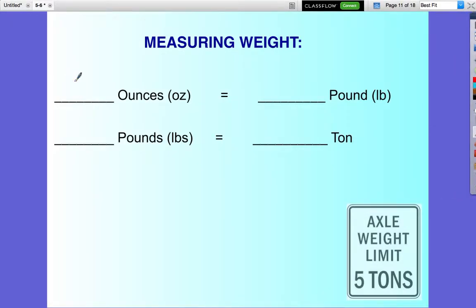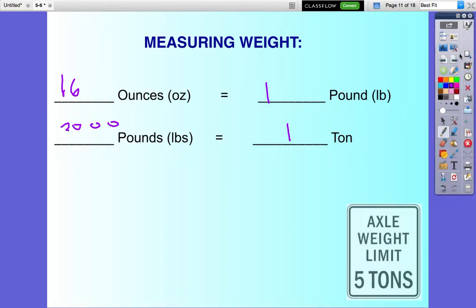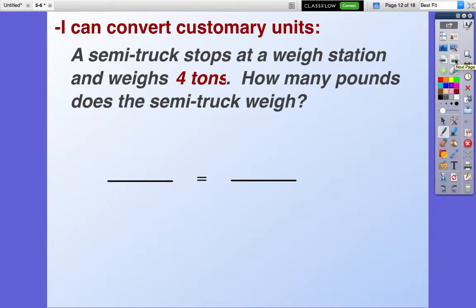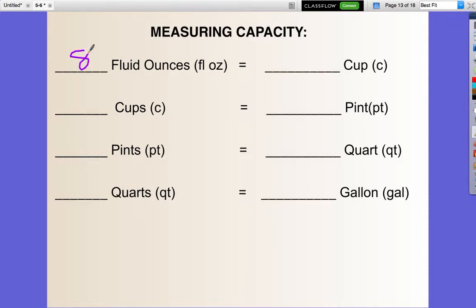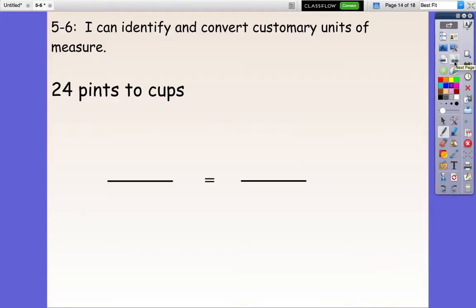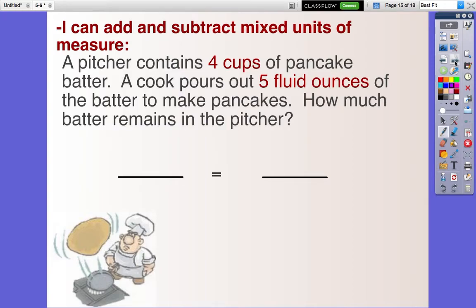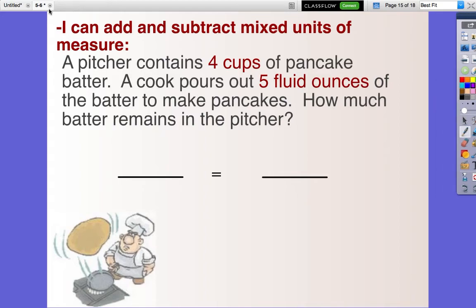We did this in class but I'll do this with you right now. 16 ounces is 1 pound. 2,000 pounds is 1 ton, so figure out this. We're going from tons to pounds. 8 fluid ounces is 1 cup, 2 cups is 1 pint, 2 pints is 1 quart, 4 quarts is 1 gallon. This one's pretty easy, pints to cups. Go ahead and try these.